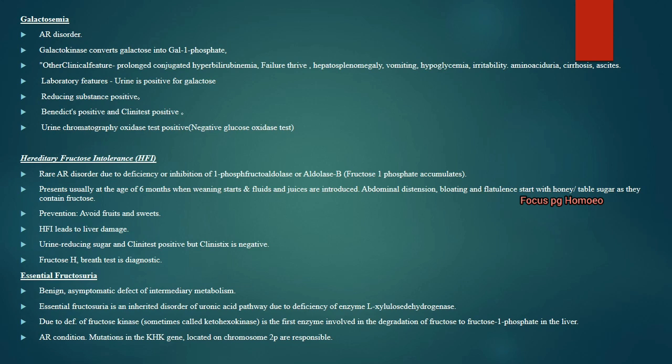Hereditary fructose intolerance (HFI) is a rare autosomal recessive disorder with deficiency of 1-phosphofructoaldolase (aldolase B). The patient usually presents at 9 months when weaning starts and fruits/juices are introduced. There is abdominal distension, bloating and flatulence with honey and table sugar as they contain fructose. The patient should avoid fruits and sweets. Positive reducing sugar and Clinitest test confirm the diagnosis. The fructose H-brick test is the diagnostic test for HFI.